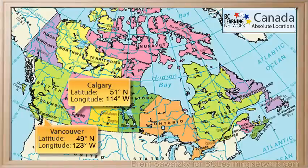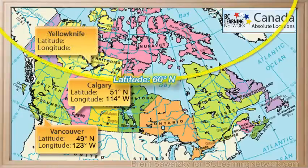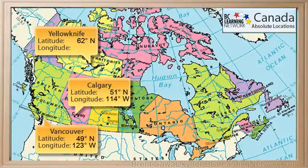Why don't we try one up north here? How about Yellowknife? Well, we can see that it's above the 60th, or north of 60 — only a little ways north of it though. 62 degrees north. Looking at longitude, it's actually really similar to Calgary.